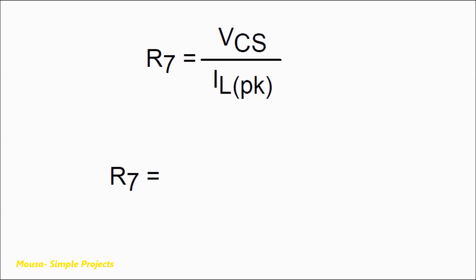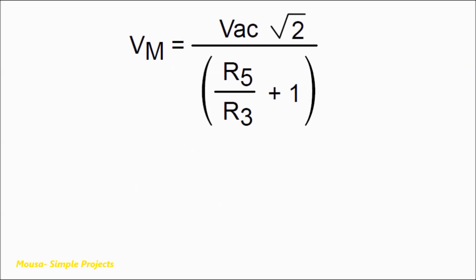The next important formula is used for calculating the value of the current sense resistor. According to the datasheet, Vcs equals 0.5 volts and the peak current of the inductor I calculated before equals 0.23 amps, so the resistor should be 2.2 ohms.